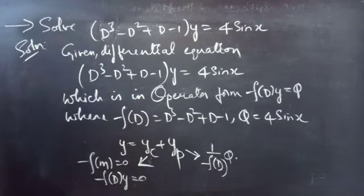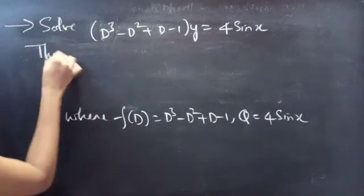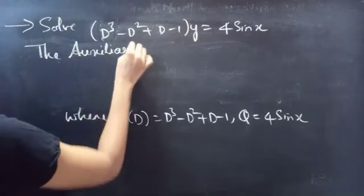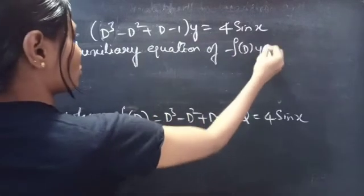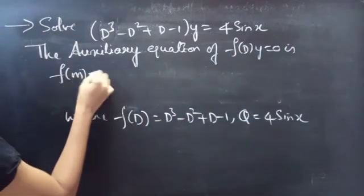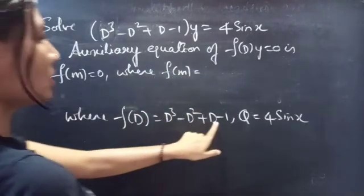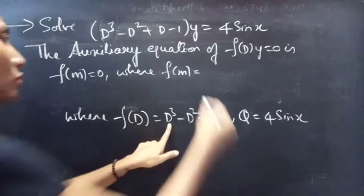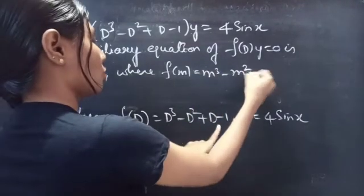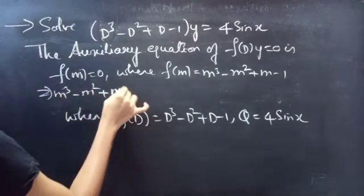Let's find the complementary function using the auxiliary equation of the homogeneous equation. The auxiliary equation of f(D)y = 0 is f(m) = 0. Since f(D) = D³ - D² + D - 1, we replace D by m to get f(m) = m³ - m² + m - 1. So the auxiliary equation is m³ - m² + m - 1 = 0.